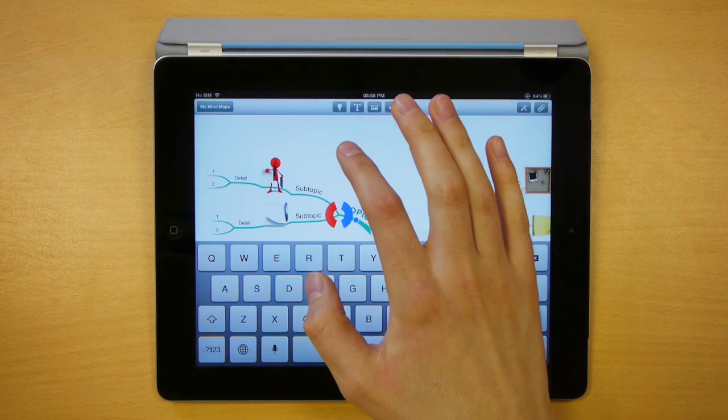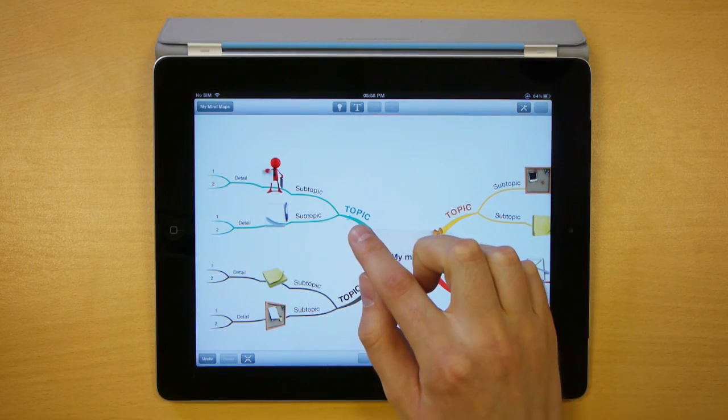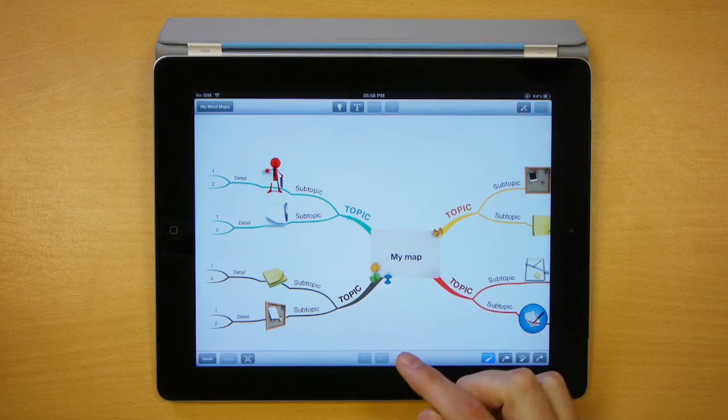When you're finished, go back to your map and you'll see you've got the audio note icon on your branch letting you know that there is an audio note here.